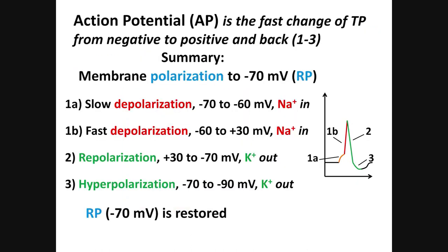Let's review. Action potential is the fast change of the TP from negative to positive numbers and back, and it includes three main stages. One: depolarization. Two: repolarization. Three: hyperpolarization — in this order. Depolarization is subdivided into 1A, slow depolarization to the threshold level, and 1B, fast depolarization from negative to positive numbers. Depolarization is the result of sodium ions moving into the cell — the inside is getting more positive. Repolarization and hyperpolarization are produced by potassium moving out of the cell — the inside is getting less positive. All stages are shown on the graph. After hyperpolarization, the TP is restored to the resting potential level and the cycle can be repeated.